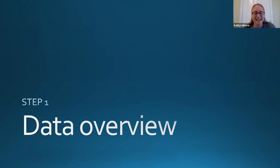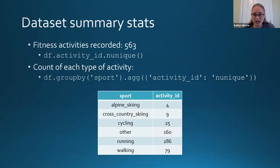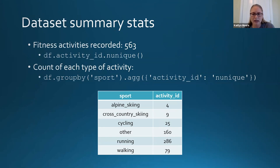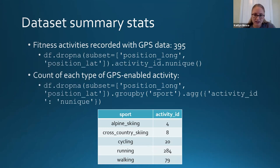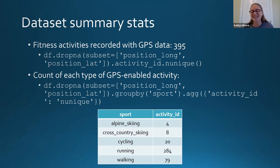Jumping into the dataset, here are some summary statistics. The dataset contains 563 unique recorded activities, with several different types: downhill and cross-country skiing, cycling, running, walking, and a category of 'other' which is largely weight training, yoga, or cardio kickboxing. I filtered down to only those activities where I recorded GPS coordinates, which drops treadmill activities or spin classes where I'm not actually going anywhere.